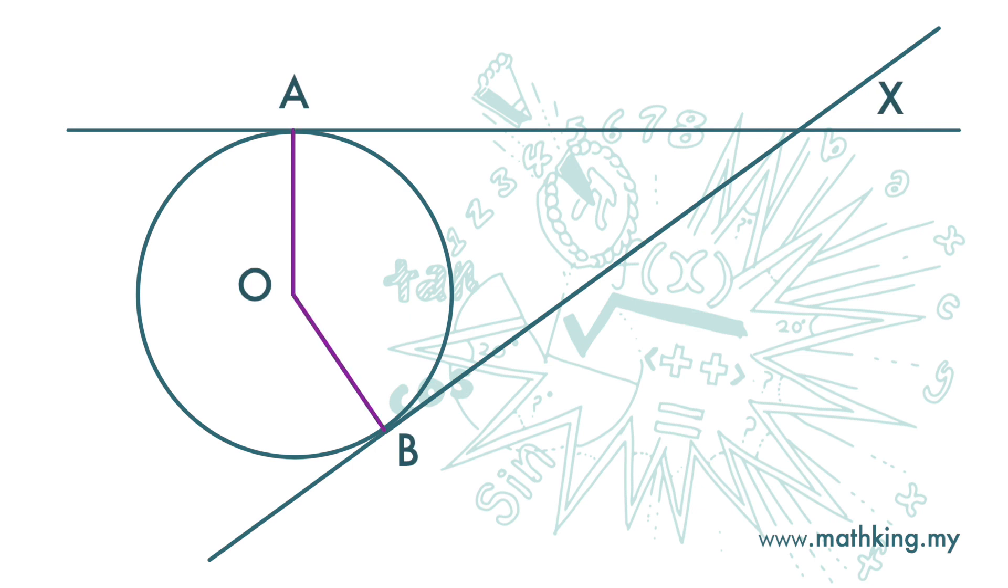OA and OB are equal in length because both are the radius of this circle. Angle here at A and B are both 90 degrees.